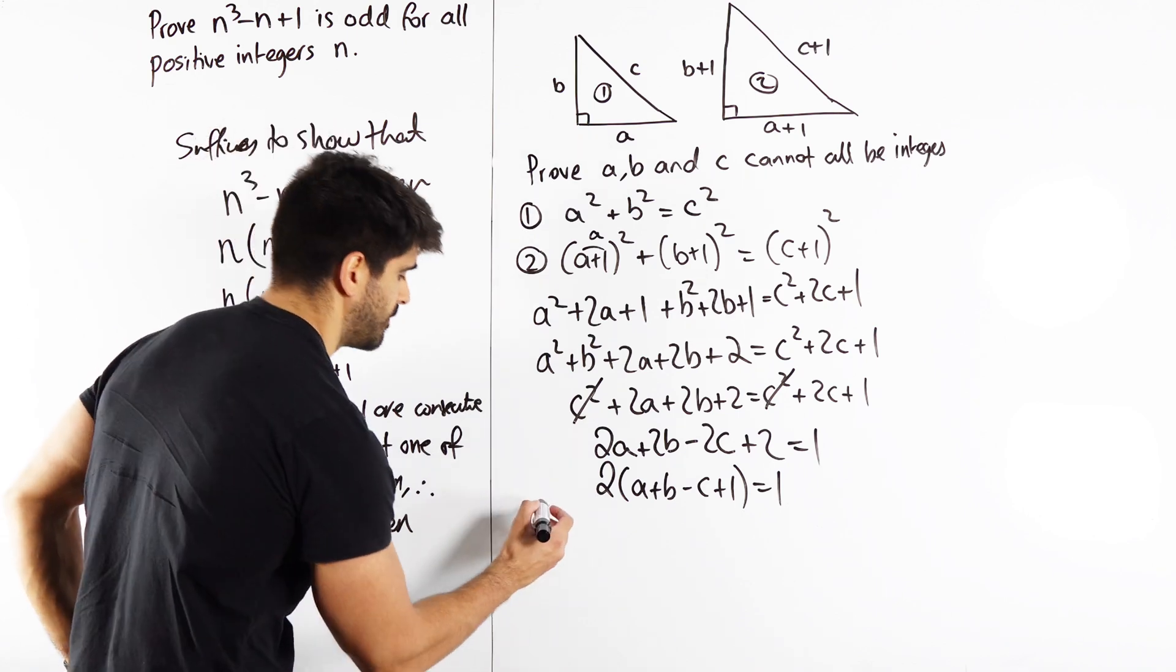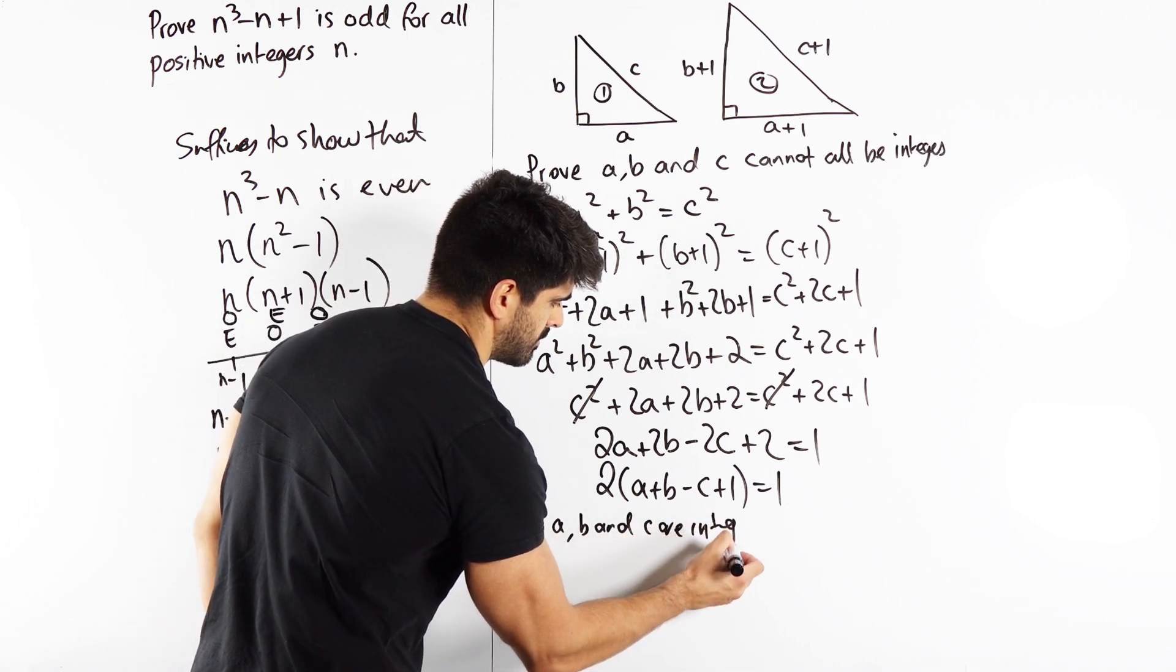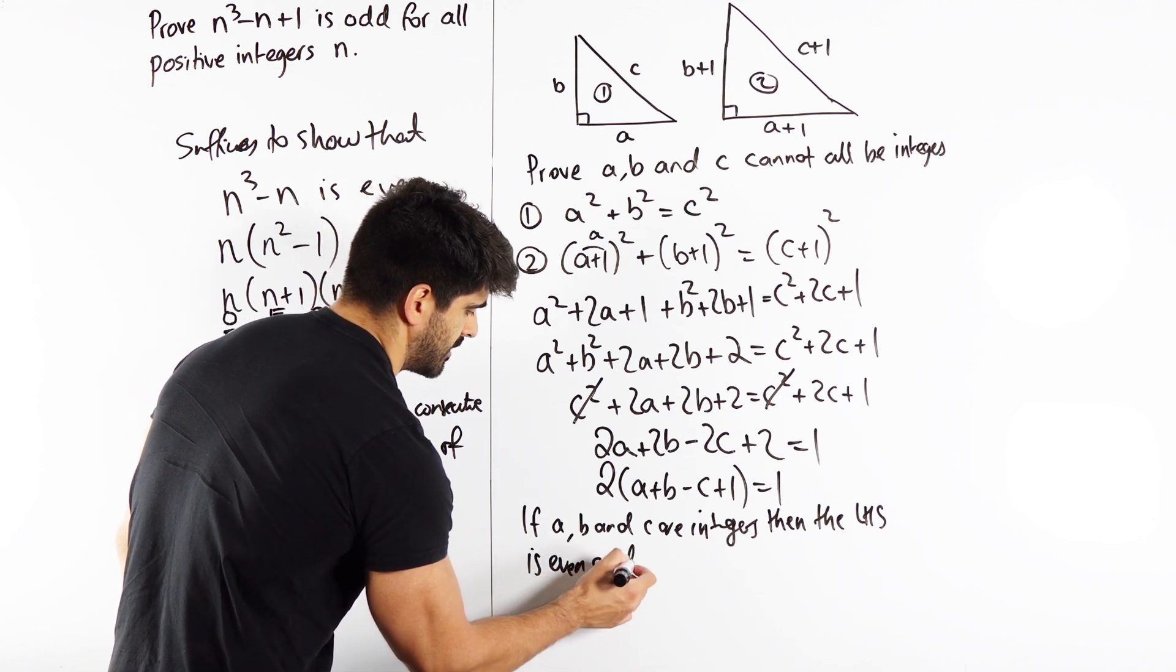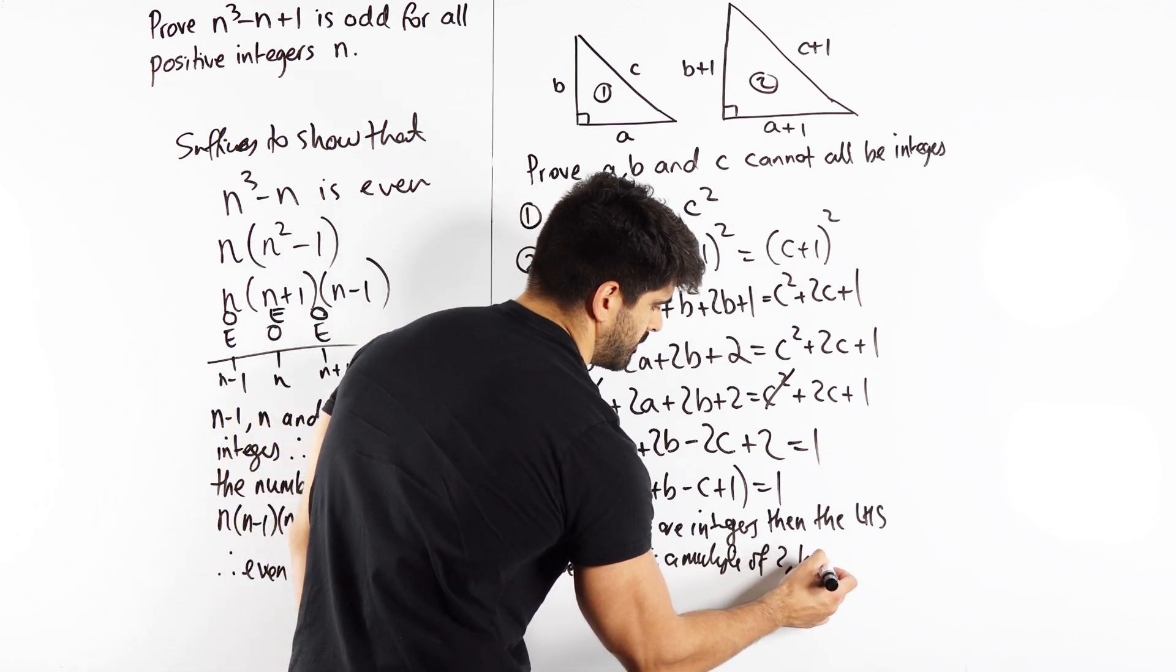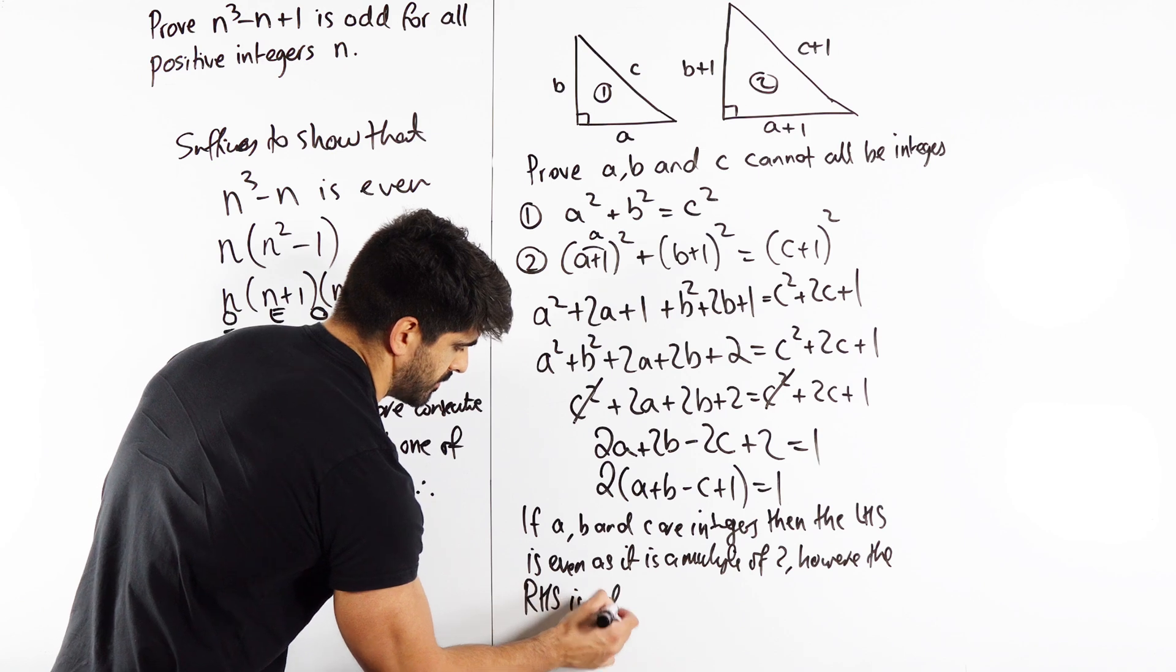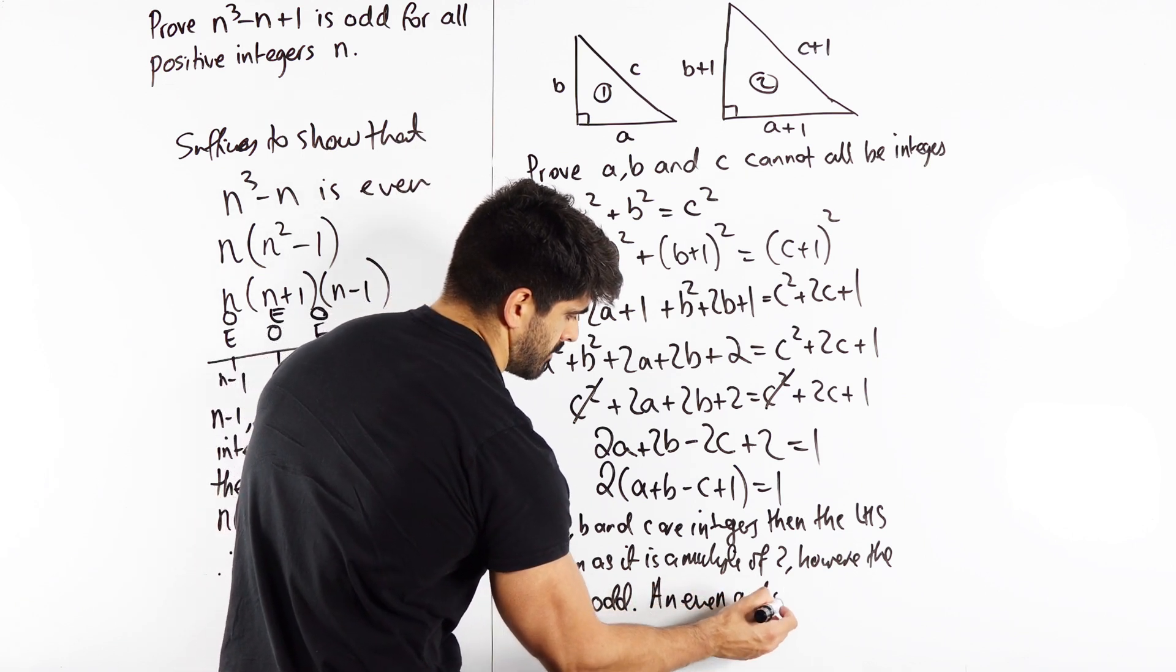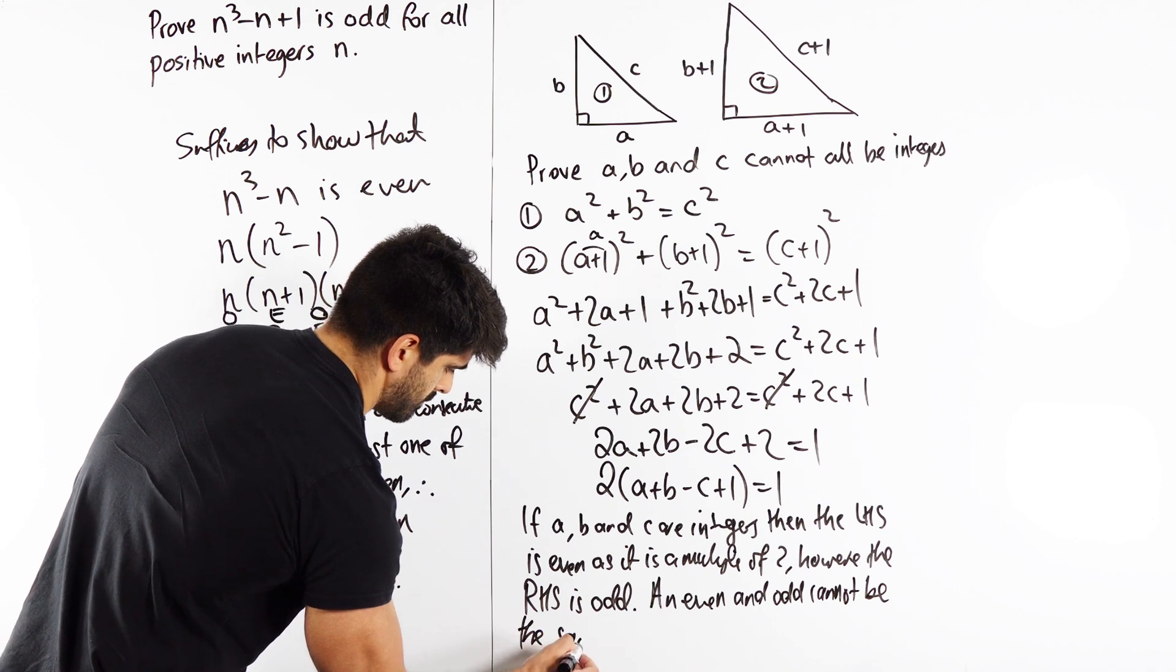So we need to write a little explanation here. If A, B and C are integers, then the left hand side is even as it is a multiple of 2. However, the right hand side is odd. An even number and an odd number cannot be the same.